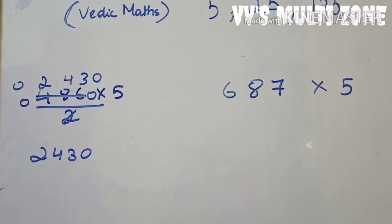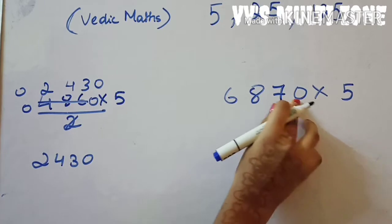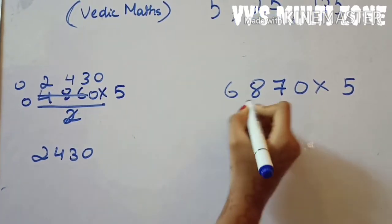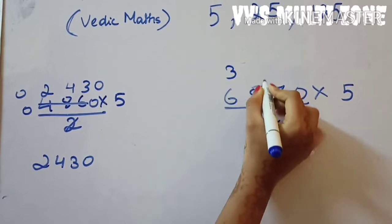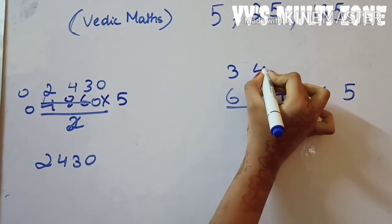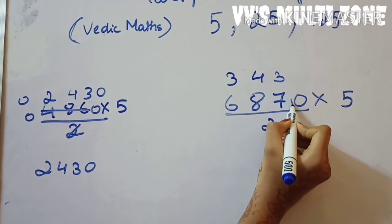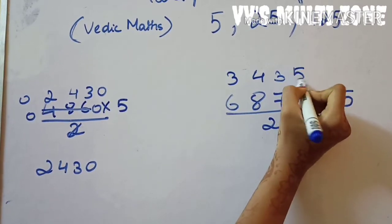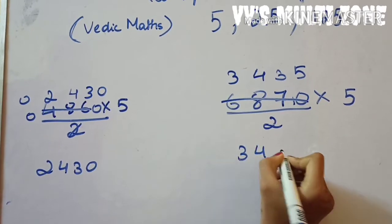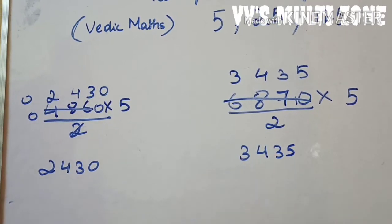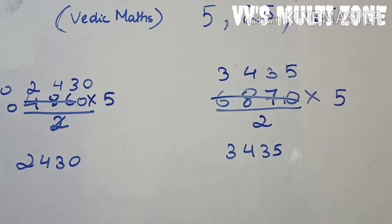The second question is 687 into 5. If you write zero or if you don't write it, it's not a problem — we add zero at the right. Now divide by two: two threes are six, two fours are eight, two threes are six, and one will get carried. Two fives are ten — your answer is three thousand four hundred and thirty-five.